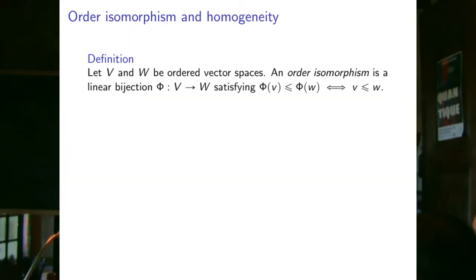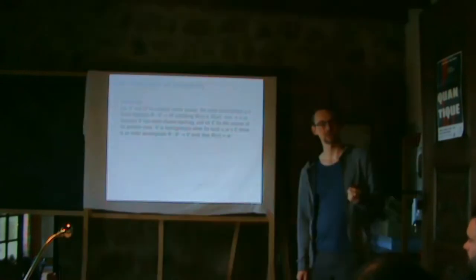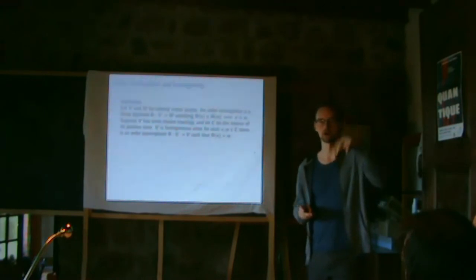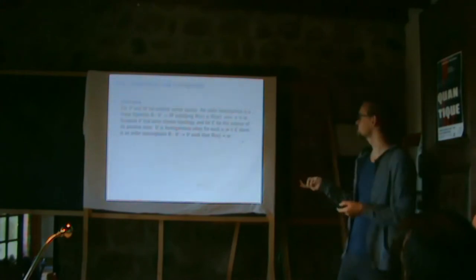If you have two ordered vector spaces, an order isomorphism is a linear bijection that preserves the order in both directions: v ≤ w if and only if f(v) ≤ f(w). If we give V a topology — in the finite-dimensional setting there's a unique canonical topology inherited from Rⁿ — we can then talk about the interior of the positive cone.